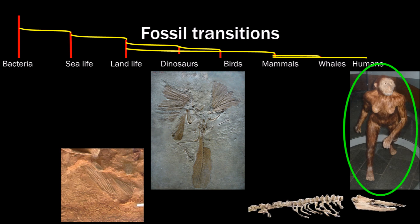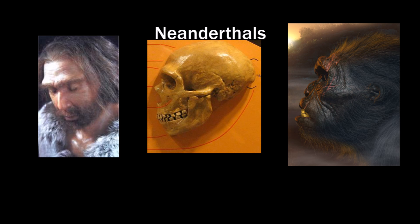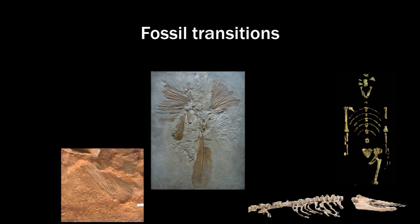Lucy is a combination of a chimpanzee and a human skeleton, which were found 200 meters apart. Neanderthals were slightly different than us, but there is no compelling evidence as to why we should consider them not human — the variety in dogs is much greater, for example. So technically, these fossils are the most prominent and famous pieces of evidence for evolutionary theory — the remnants of a fish, a bird, an incomplete skeleton, and a chimpanzee. So much for evidence for evolution.